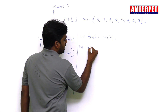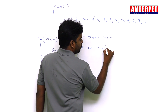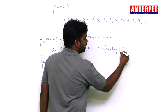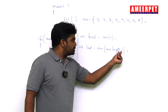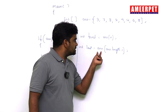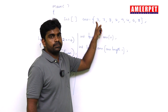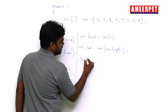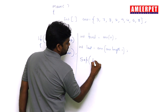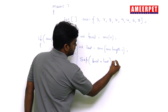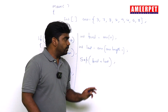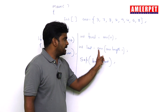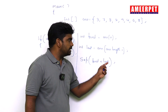We declare int last = arr[arr.length - 1], which gives us 8, the last element. Then the sum is: System.out.println(first + last). If you don't want to use separate variables, you can directly write arr[0] + arr[arr.length - 1].